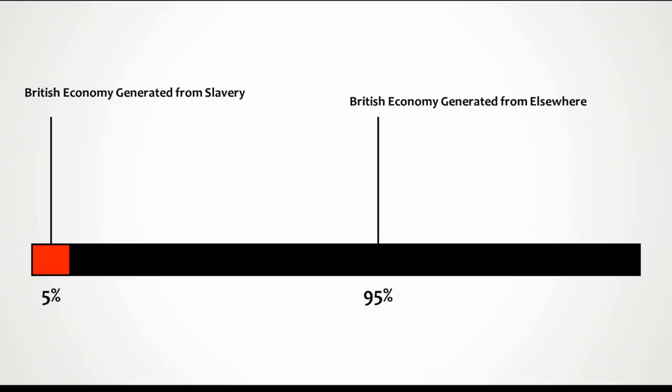One question I had whilst watching Alternate History Hub's video was how much wealth did the African slave trade actually generate for European nations? He seems to make out that it's this huge portion of wealth — a house of cards situation where if you take away the wealth generated by the slave trade, Europe would essentially be blitzed back into the dark ages. I'm going to challenge this theory. Stanley Engelman, an economist, calculated that with the most favourable odds, in any year of the Industrial Revolution, only 5% of the British economy was garnered through slavery.